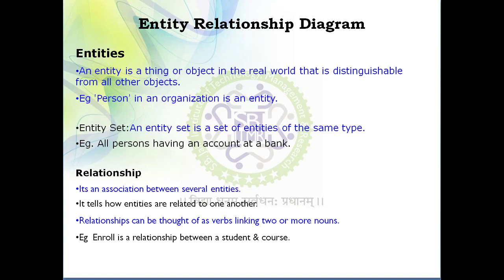What is the difference between entity and entity set? An entity is a single object, whereas an entity set is a group of entities of the same type. For example, the word 'student' can represent a single entity or an entire entity set of multiple students. So entity is a single instance and entity set is a group of entities.